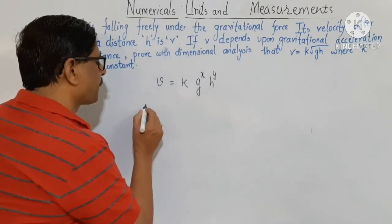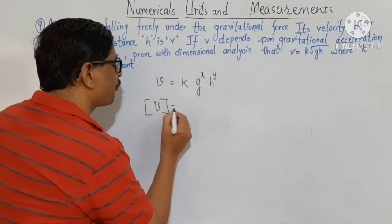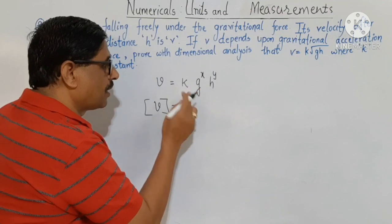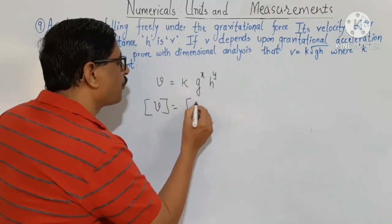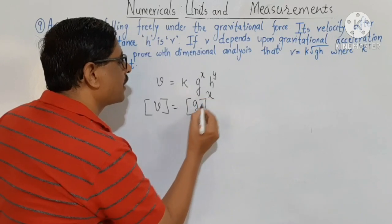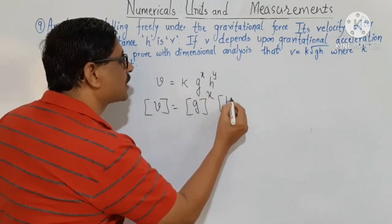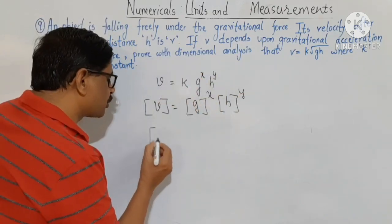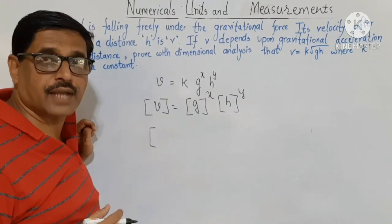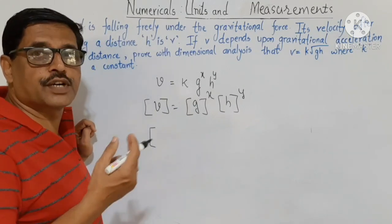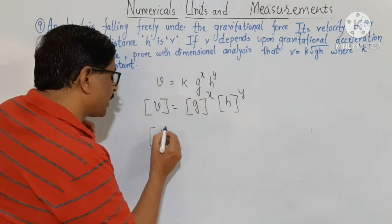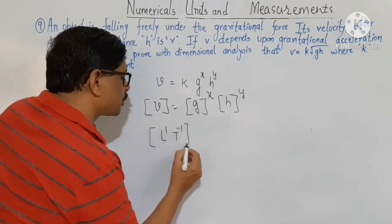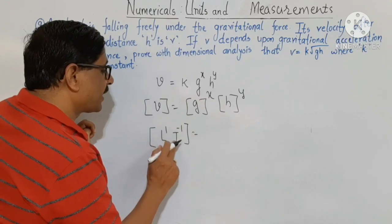The dimensions of V: we leave K because it is dimensionless. So dimensions of V equal dimensions of g raised to x, times h raised to y. Velocity is displacement per unit time; its unit is meter per second, so dimensions are L to the power 1, T to the power minus 1.